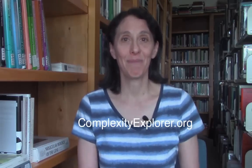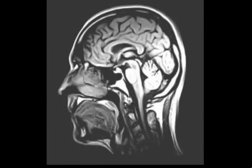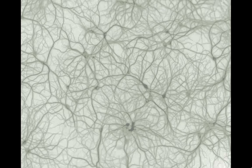What is a complex system? One good example is the brain, in which trillions of neurons interact in complicated ways. Somehow, this vast network of cells and connections produces the highly complex behaviors that we call cognition, or intelligence, or even consciousness. How does this happen?